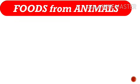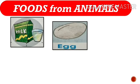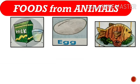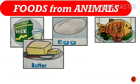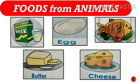Next is foods from animals. Tell me some food items that we get from animals. They are: first is milk, and we get milk from cows, buffaloes and goat. Another one is egg — which animal gives us eggs? Hen and duck. Next is fish, butter and cheese. These are the food items we get from animals.